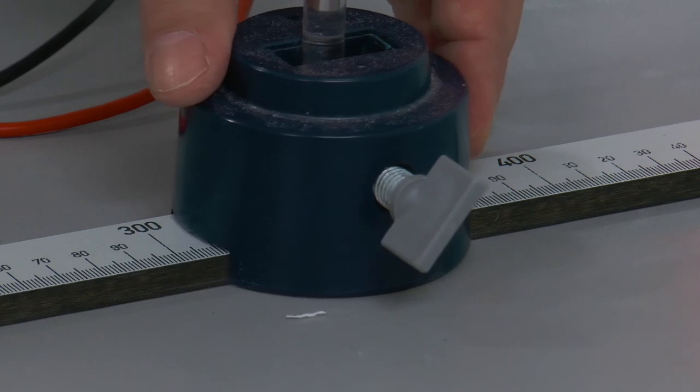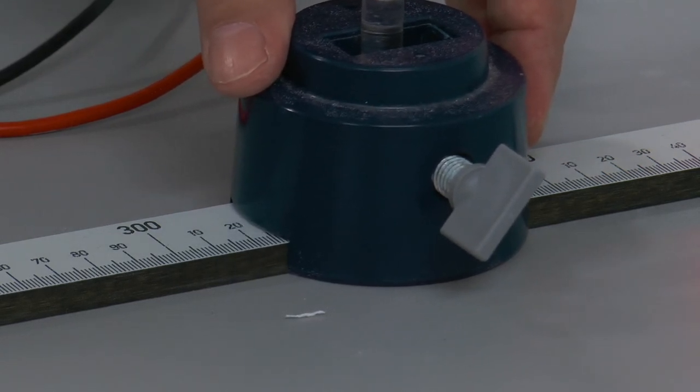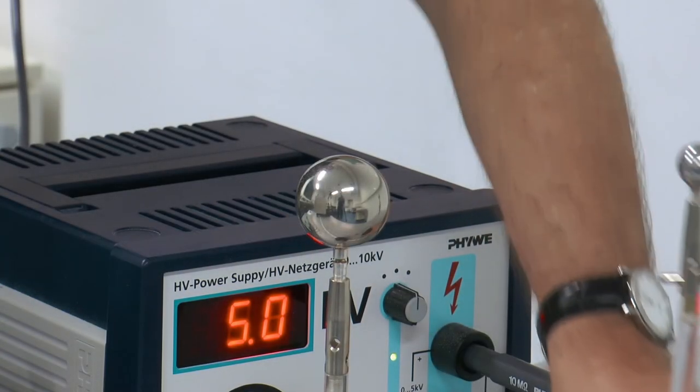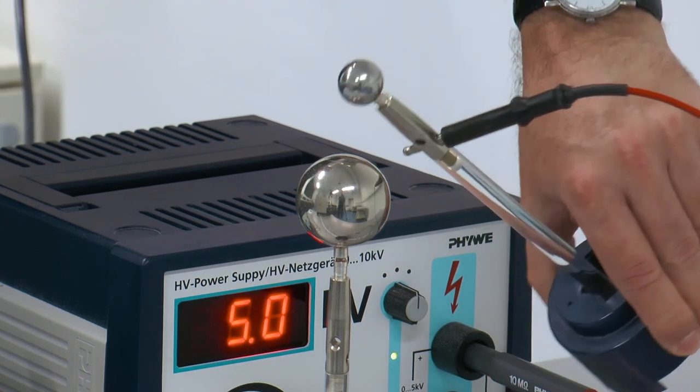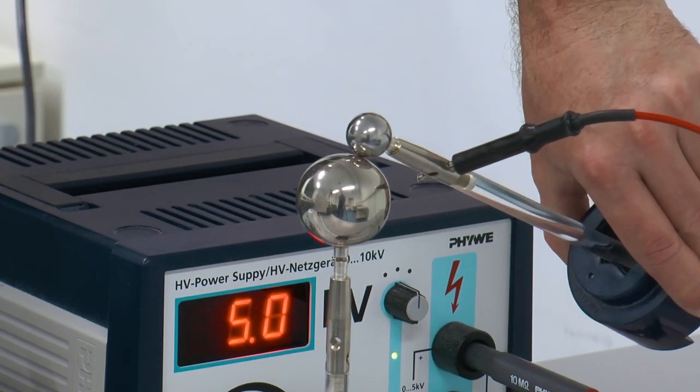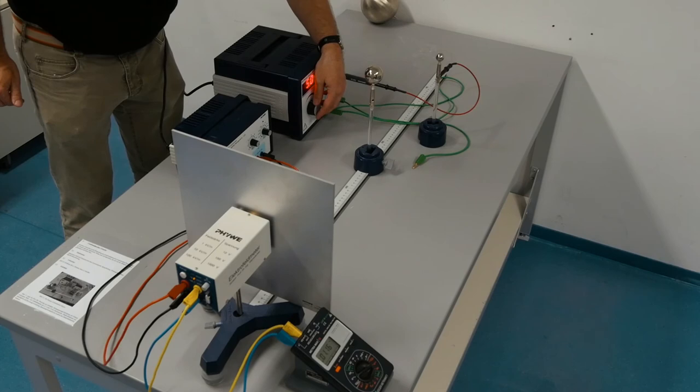For charging, the charging sphere is brought into contact with the sphere on the scale, then placed back on the table, and the high voltage power supply is switched back to 0V.